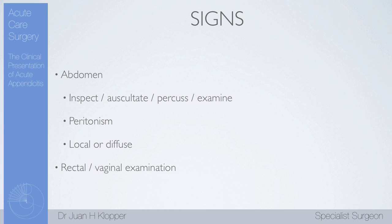Try to elicit peritonism all over the abdomen. You need to know whether this is a local process — meaning you can make your incision there for an open surgical procedure — or if it's diffuse, meaning the appendix is perforated with pus throughout the abdomen and you would need to do a full laparotomy. You need to know whether this process is local or diffuse.